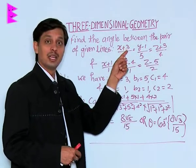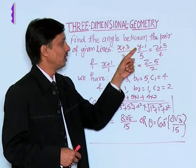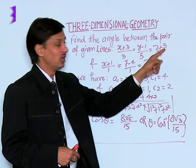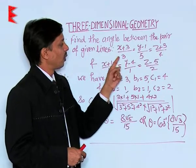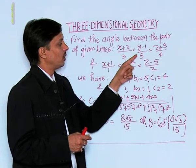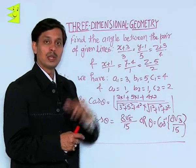We have x minus x1 that is -3, y minus 1 that is +1, z minus z1, upon a, b, c. So I can say for the first line a1 is 3, b1 is 5, c1 is 4.